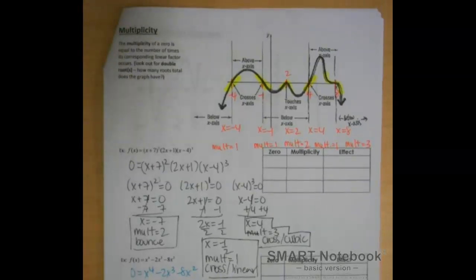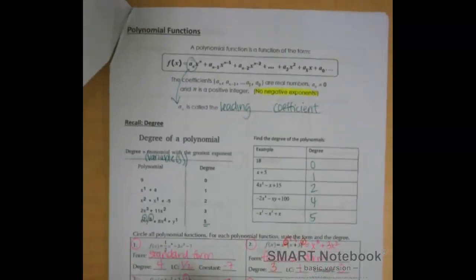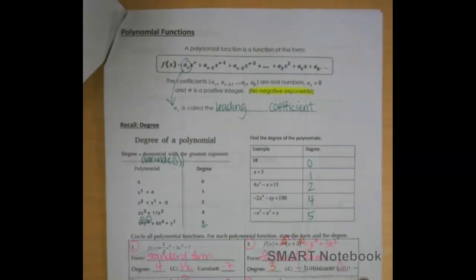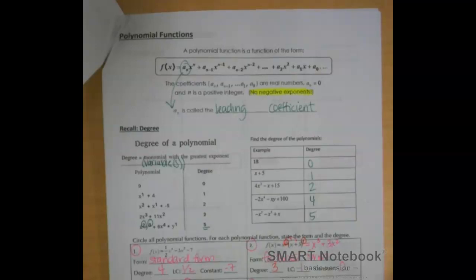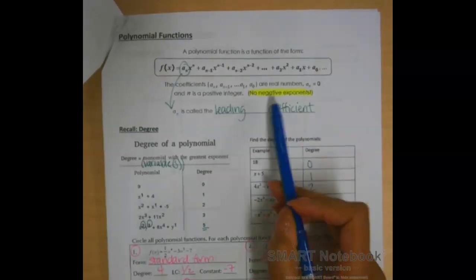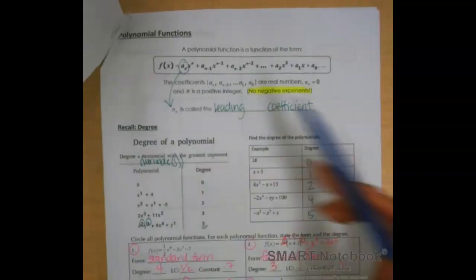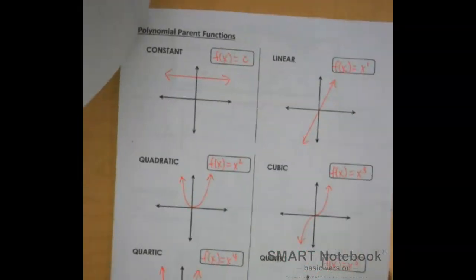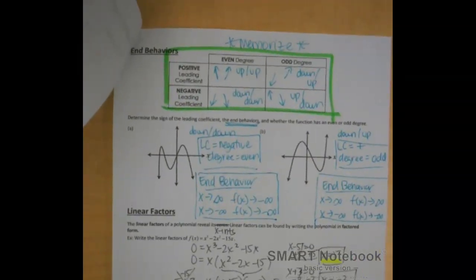Today we're going to finish the notes that we started last time. Let me take you down memory lane to tell you what we talked about. The first thing we talked about were polynomial functions. Polynomial functions are written in a specific form — they have a coefficient, variables, no negative exponents, and a leading coefficient that is always at the front of your equation. We talked about degree, parent functions, end behaviors, and linear factors.